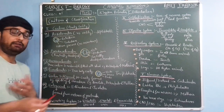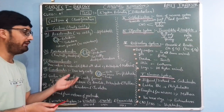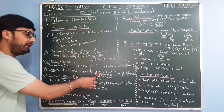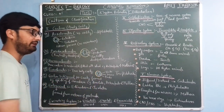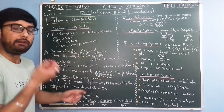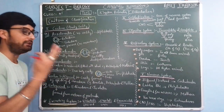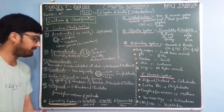Eucoelomates, like in chordates, have a true body cavity. All three germinal layers are present and they are triploblastic — triplo means three germ layers: ecto, meso, and endoderm.